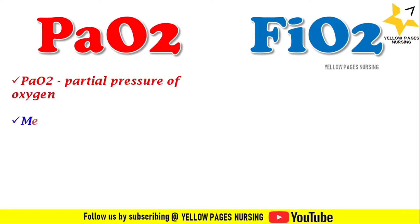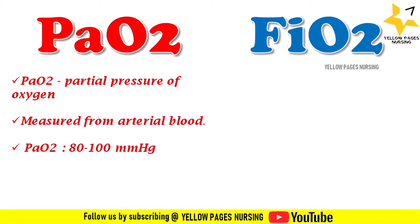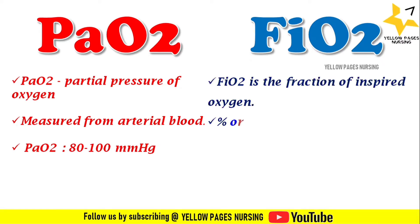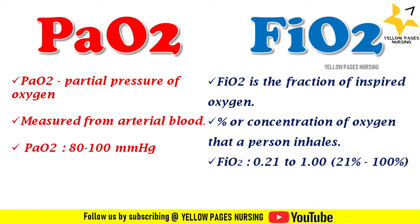Let's get into the topic. What is PaO2? It is the partial pressure of oxygen, and it is measured from arterial blood. The normal level of PaO2 ranges between 80 to 100 mmHg.